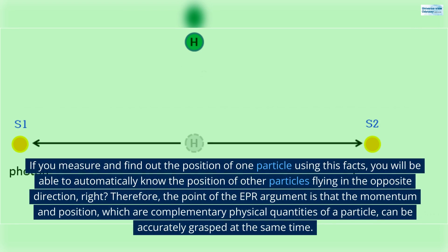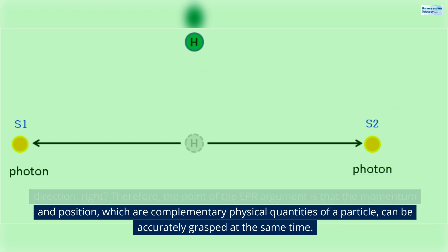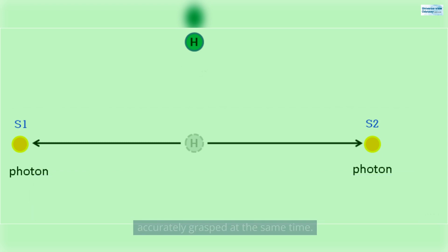If you measure and find out the position of one particle using this facts, you will be able to automatically know the position of other particles flying in the opposite direction, right? Therefore, the point of the EPR argument is that the momentum and position, which are complementary physical quantities of a particle, can be accurately grasped at the same time.